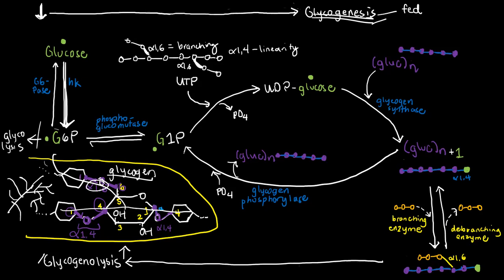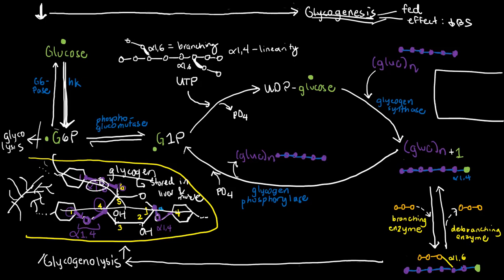When we are in the fed state, our blood sugar rises. Glycogenesis is a pathway whose effect is to reduce our blood sugar. Glycogen is a polysaccharide stored in our liver and muscle. When you eat, blood glucose rises significantly. Your body senses this and, following the principle of homeostasis, responds: there's too much glucose — we need to reduce it. One way the body does that is to insert those glucose molecules into our liver and muscle.